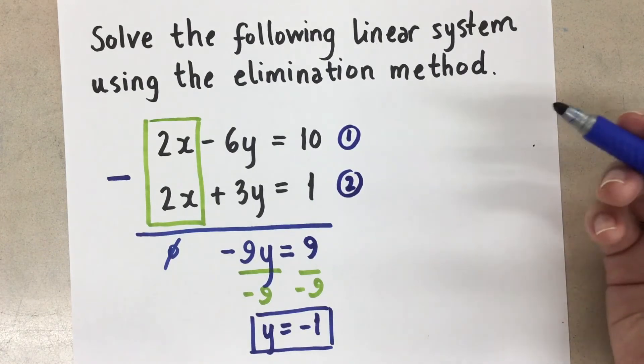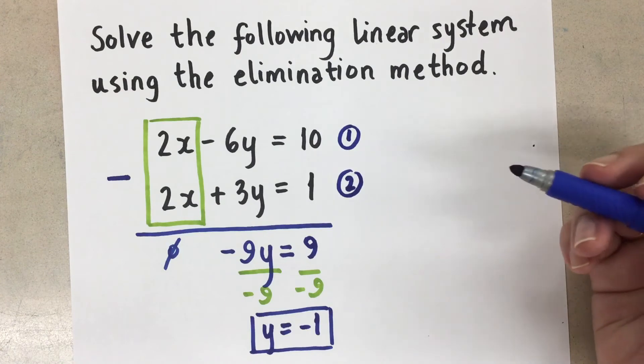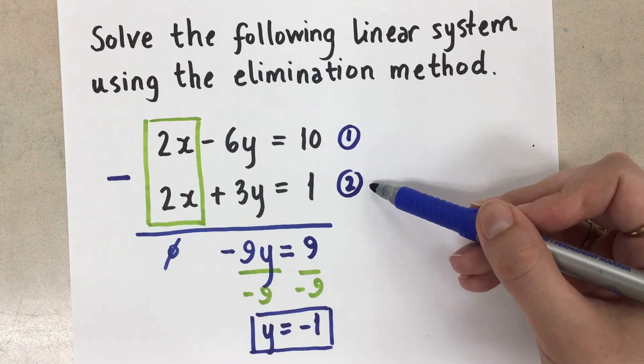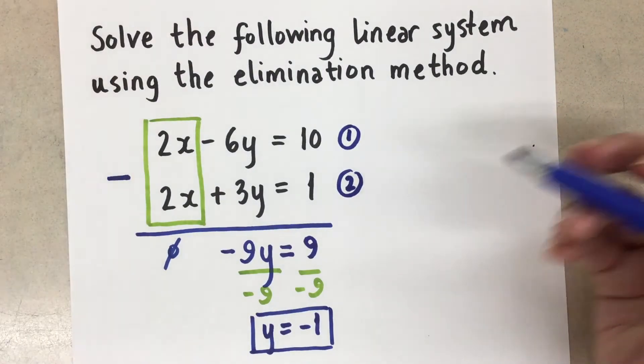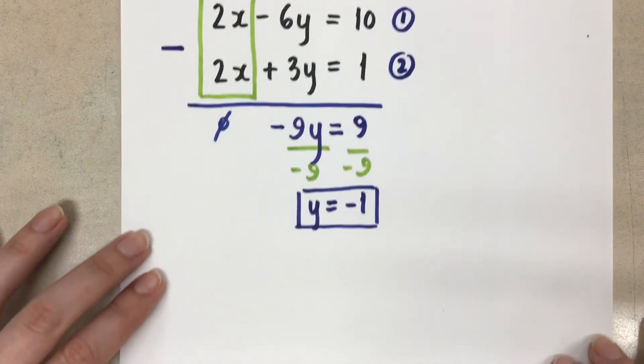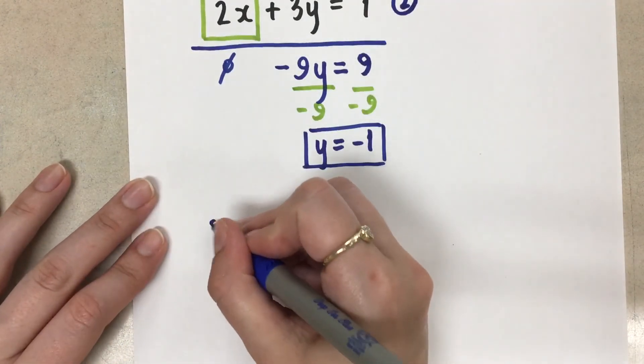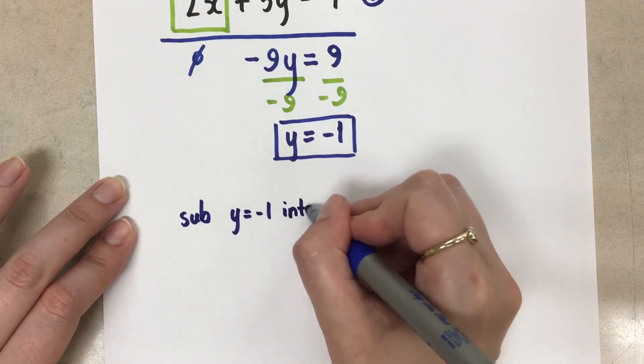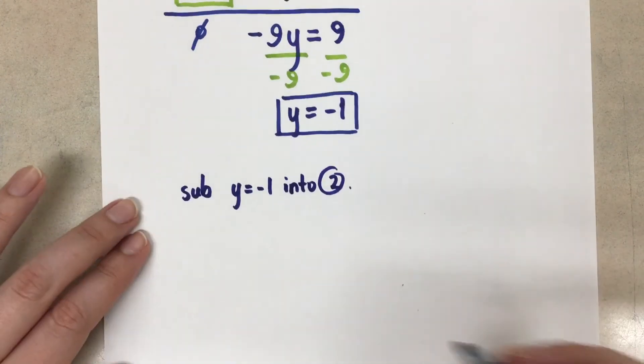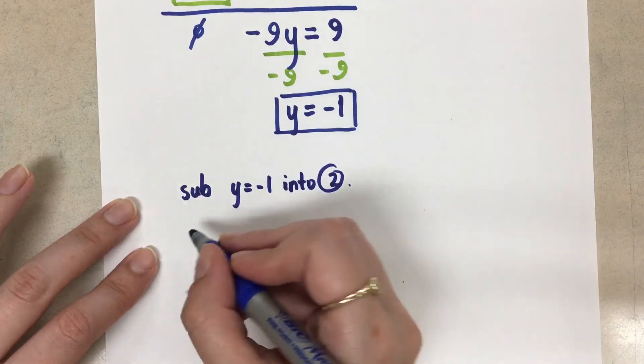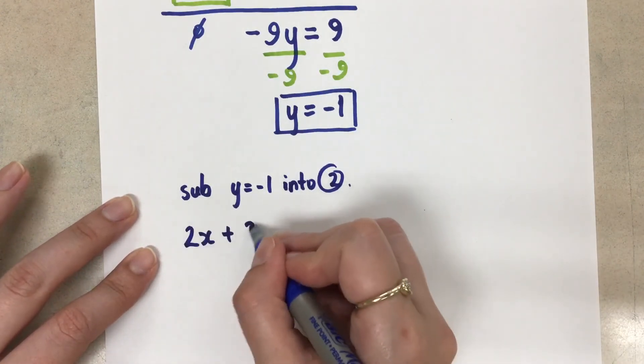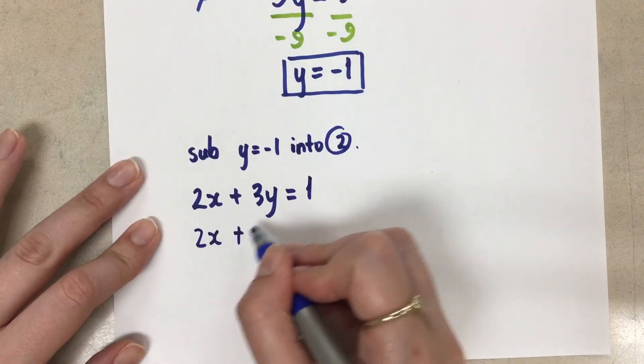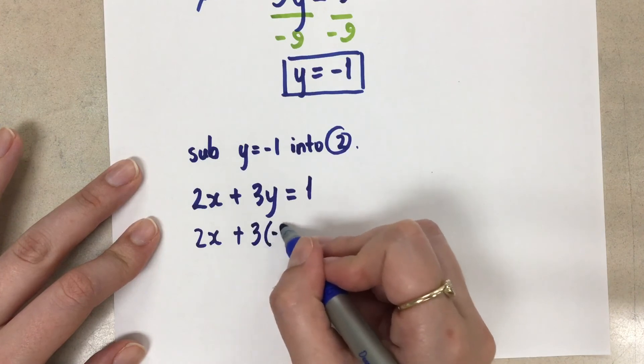So in this case, I would always suggest you choose the easiest looking equation to you, whatever that means to you. For me, I think that equation number two looks the easiest. So I'm going to choose to sub it into that one. So here, we're going to sub y equals negative one into equation number two. And when we do that, it looks like this. Let's take our equation number two, 2x plus 3y equals one. We'll sub in the negative one in for the y, like this.